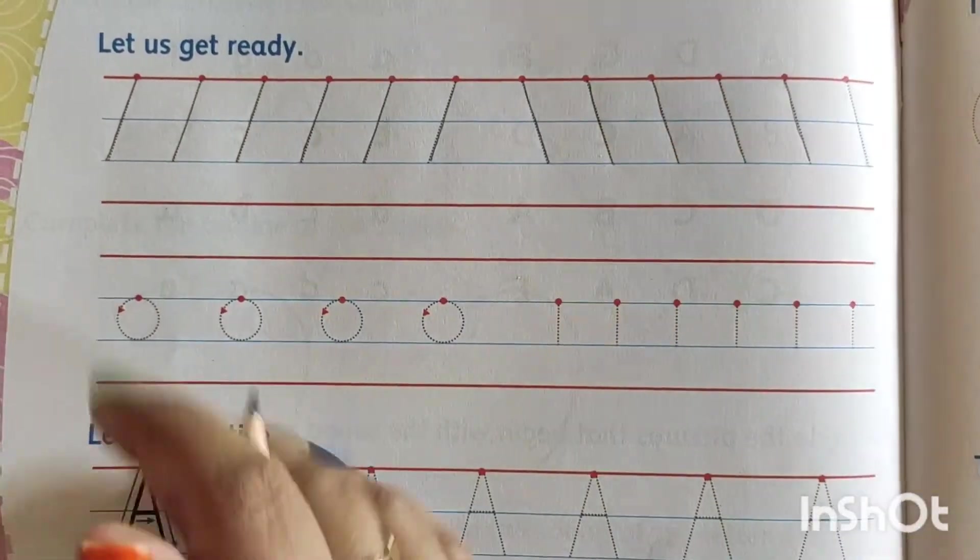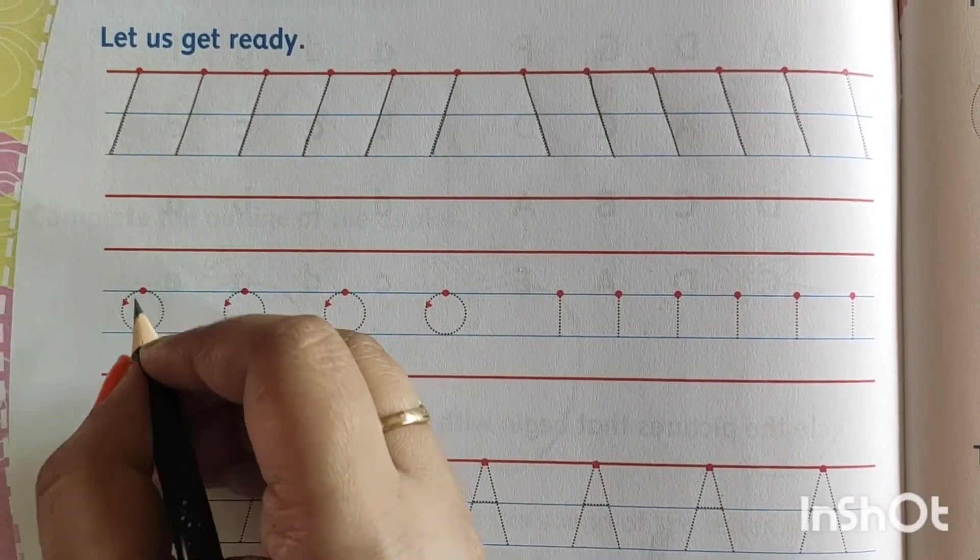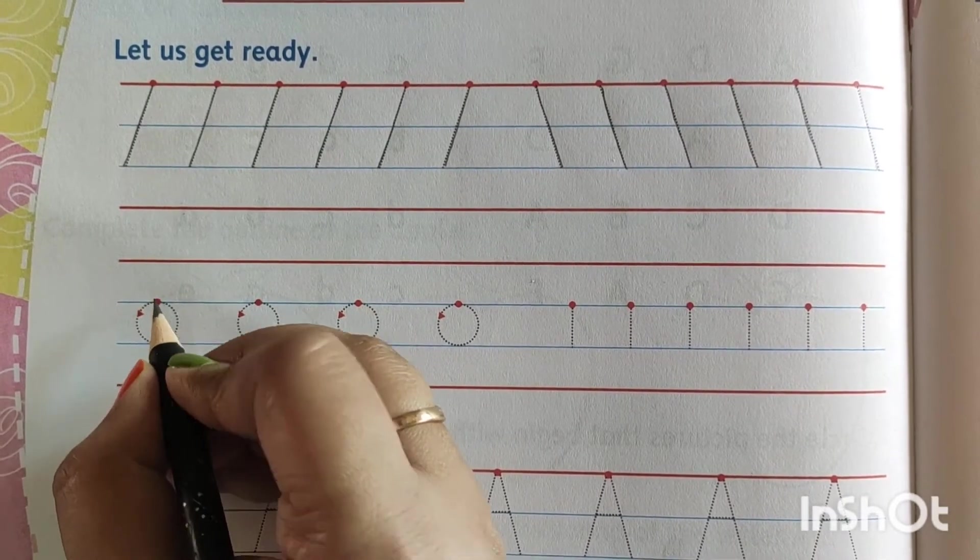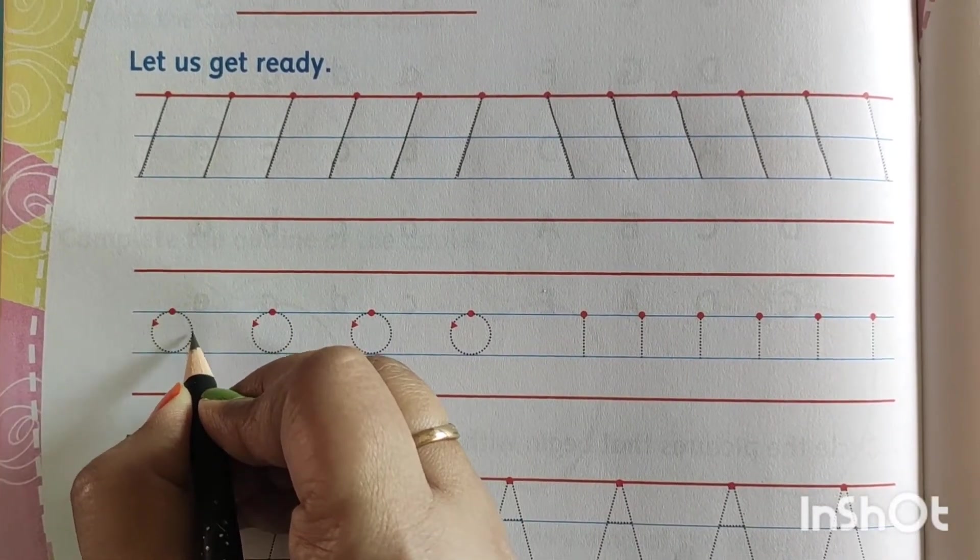It's complete. Now we will make the circle. Circle will start from here, that red point. And where it goes? This side.